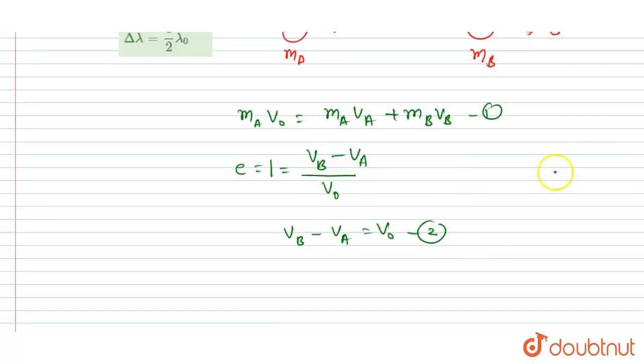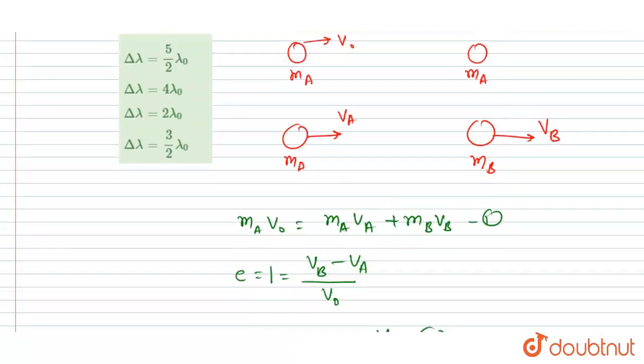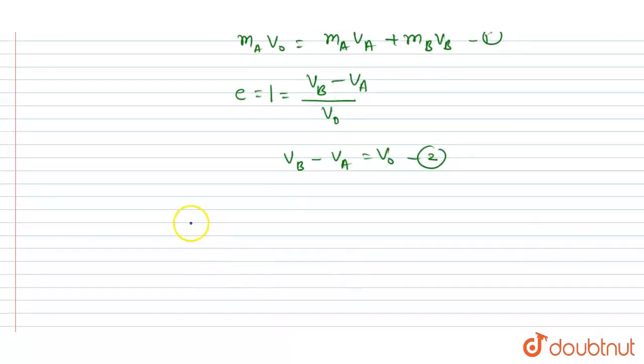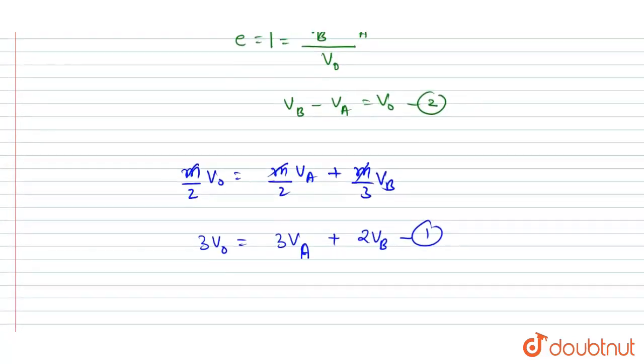If you see, mₐ is given as m/2 and mᵦ is m/3, so I will write (m/2) × v₀ equals (m/2) × vₐ plus (m/3) × vᵦ. Now you can cancel out this m. So if you multiply this equation by 6, then you will get 3v₀ equals 3vₐ plus 2vᵦ. This is equation 1.